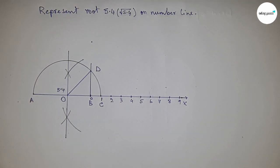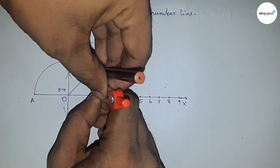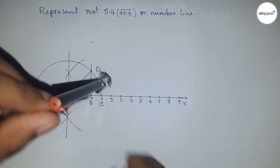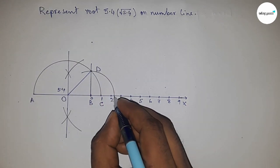Now take the length BD by compass to draw an arc which meets the number line at point P. So this is the representation of root 5.4 on the number line.